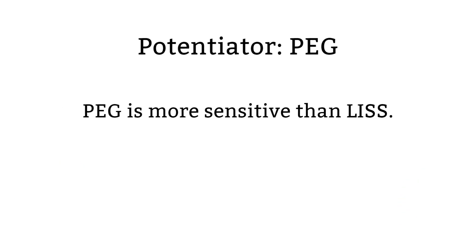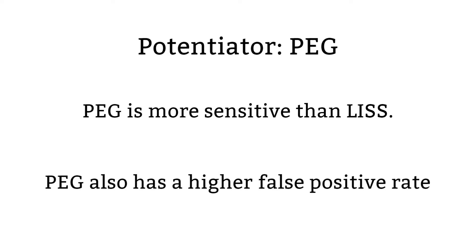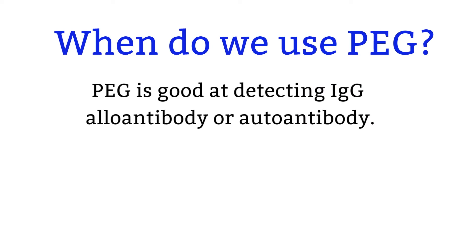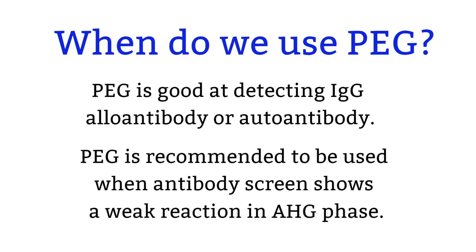PEG is more sensitive than LISS, which is another potentiator. However, you will have to be careful with PEG because it also has a higher false positive rate. PEG is good at detecting IgG alloantibody or autoantibody, but it can miss clinically significant IgM alloantibody. So if you suspect IgM, then using PEG may not be a good choice. PEG is recommended when antibody shows weak reactions in the Coombs phase.